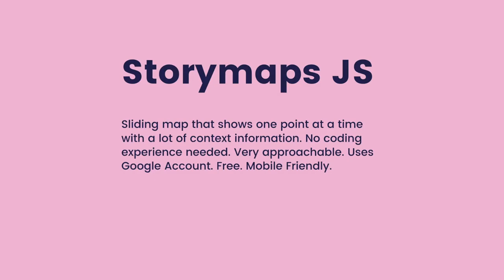StoryMaps.js, which stands for JavaScript, combines the idea of a traditional historical map, which follows a specific path, that lays on top of another map. So it'll tell you a story with context and details on top of the physical map.